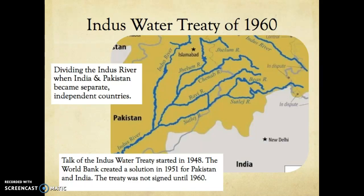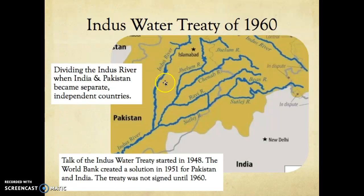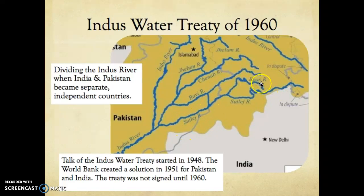The Indus Water Treaty allowed the river to divide up. Pakistan had control over the west side, which included the Indus, the Jhelum, and the Chenab, while India had control of the Ravi, the Sutlej, and the Beas.